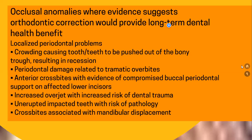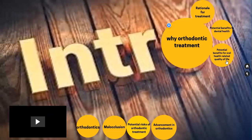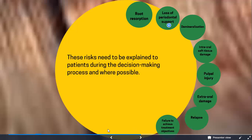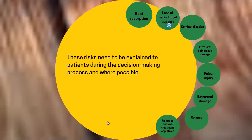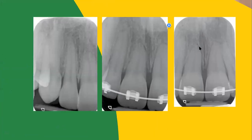Moving on to the different side effects and potential problems of orthodontic treatment. One of the common side effects of orthodontic treatment is root resorption. Root resorption is pretty normal — we can see shortened roots. Around one to two millimeters of root resorption is considered normal with orthodontic treatment.